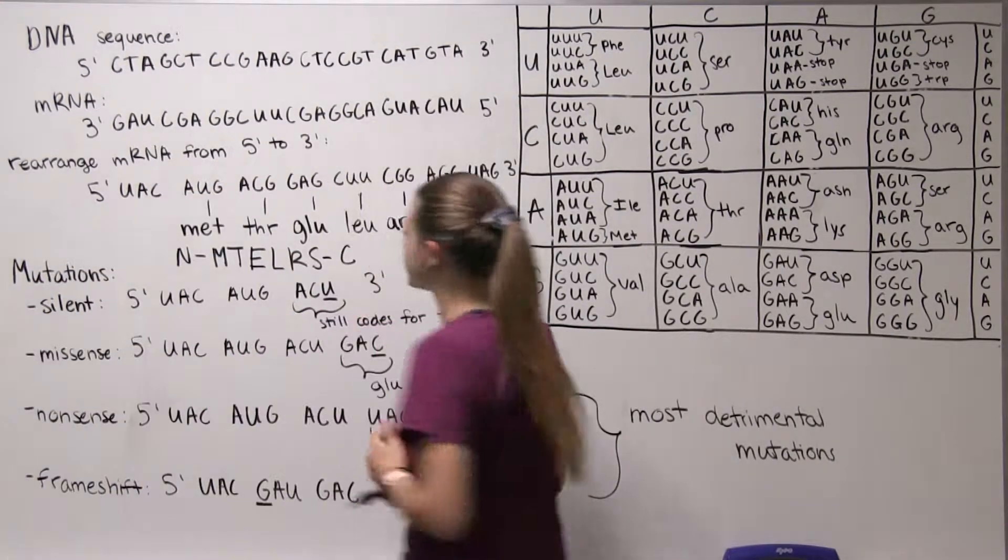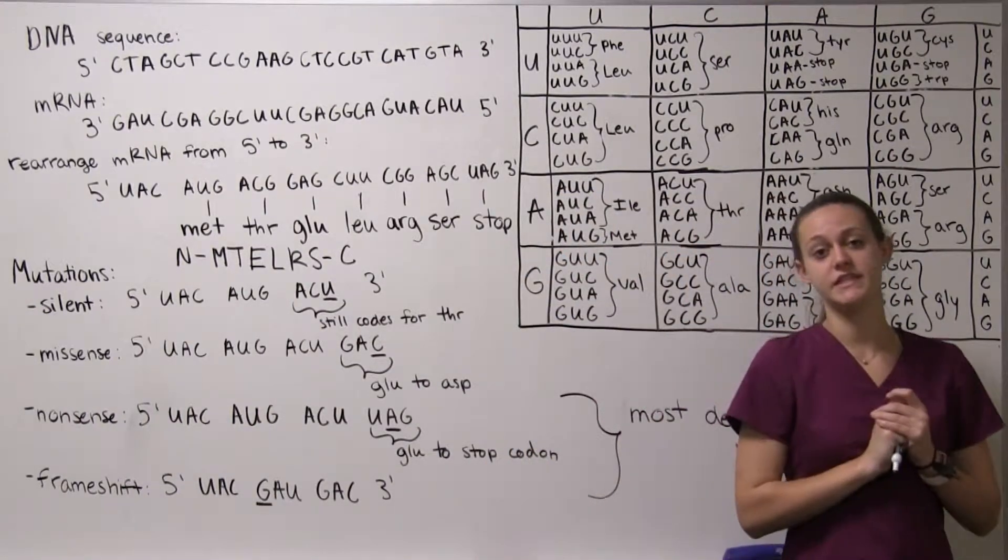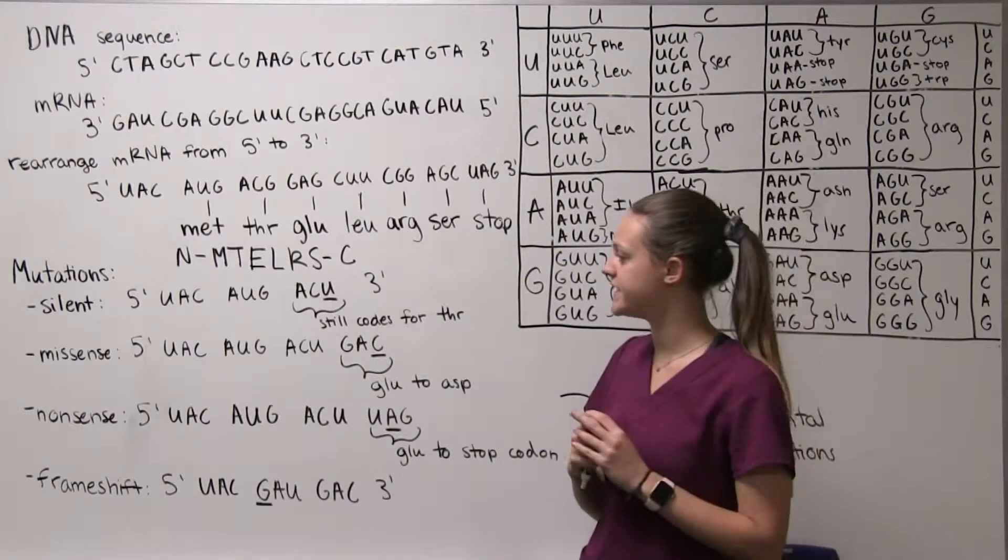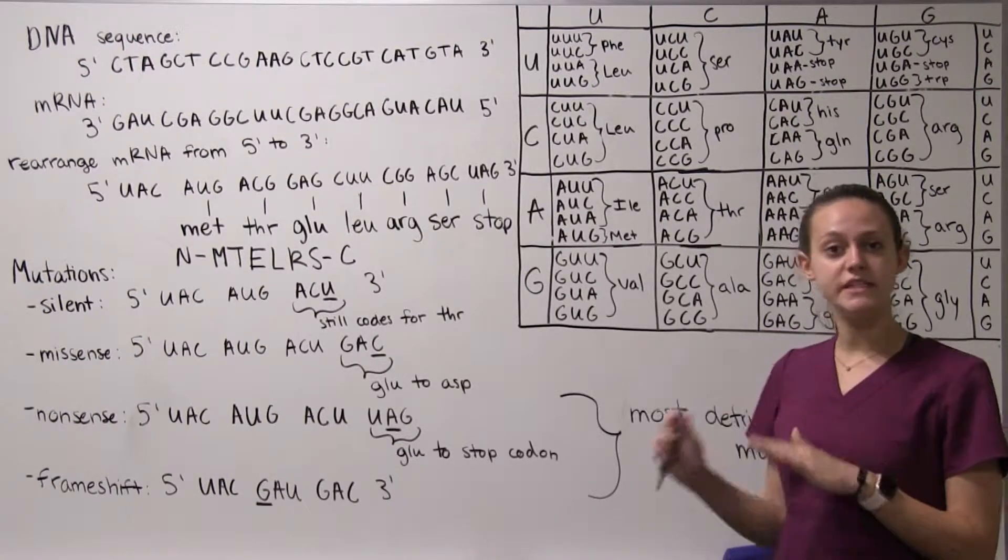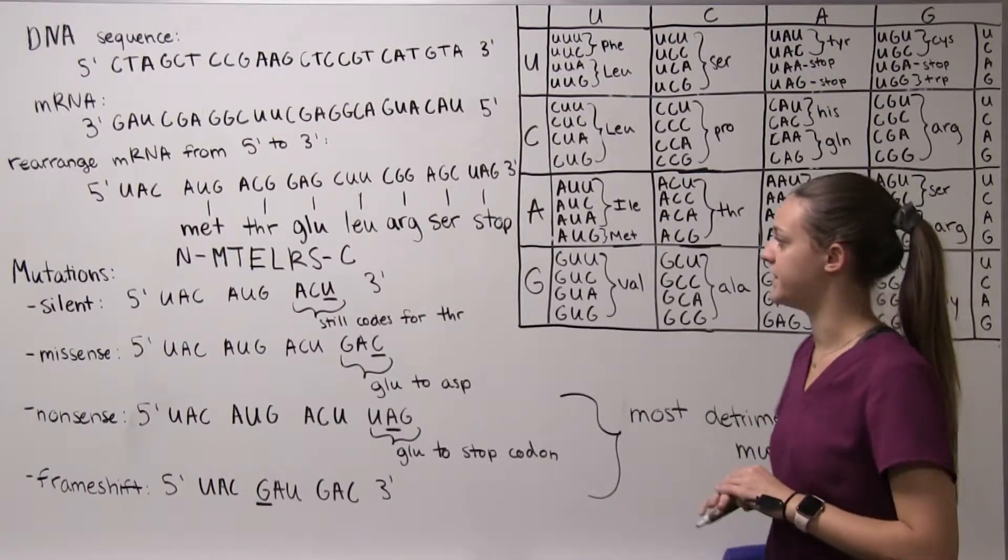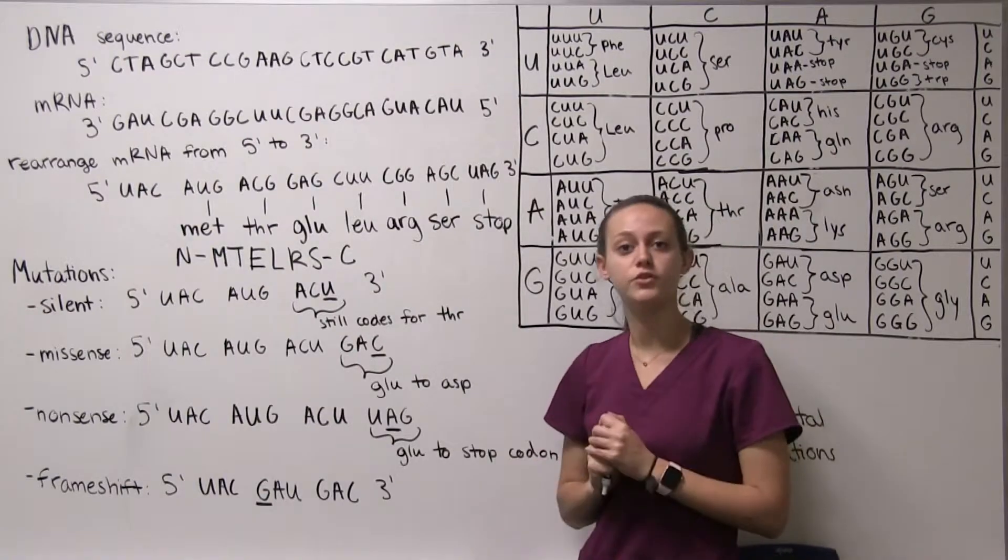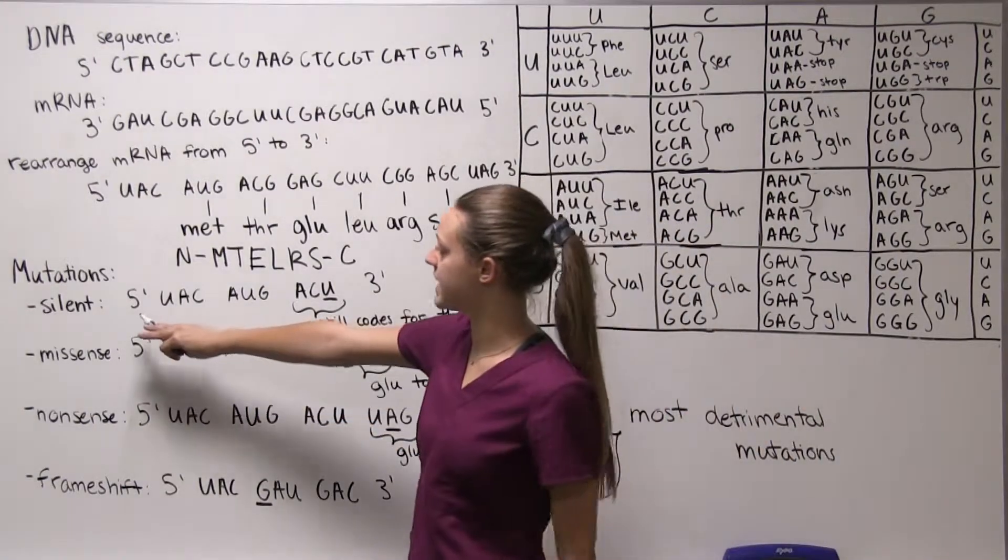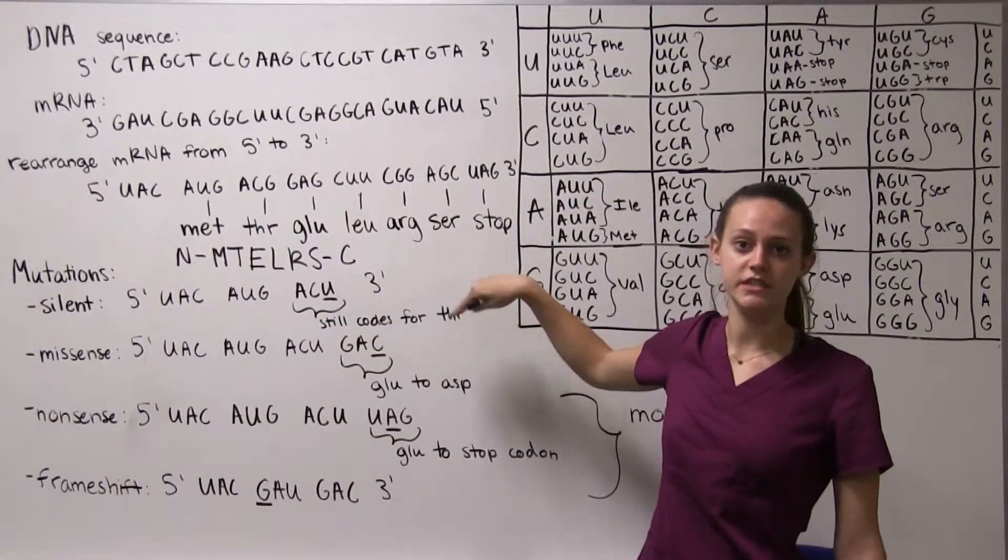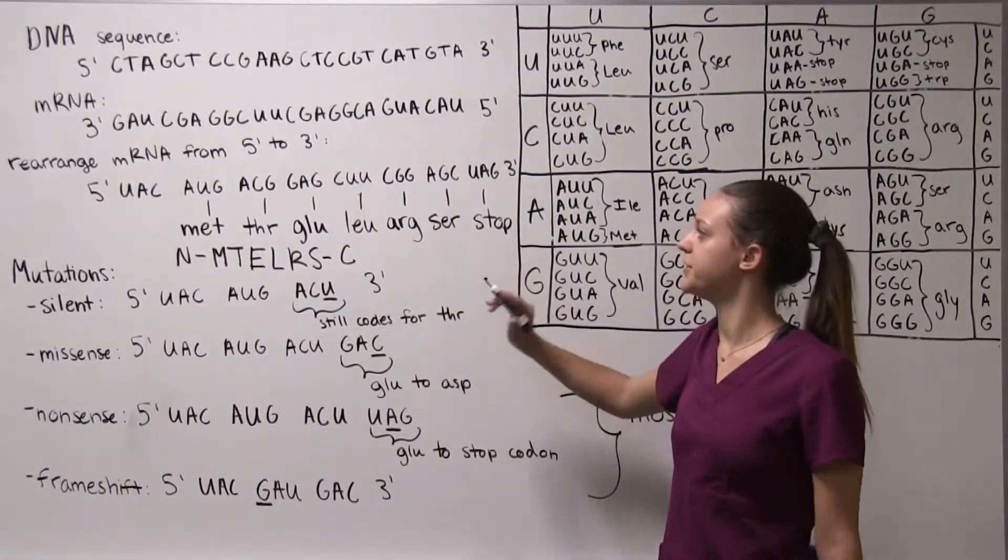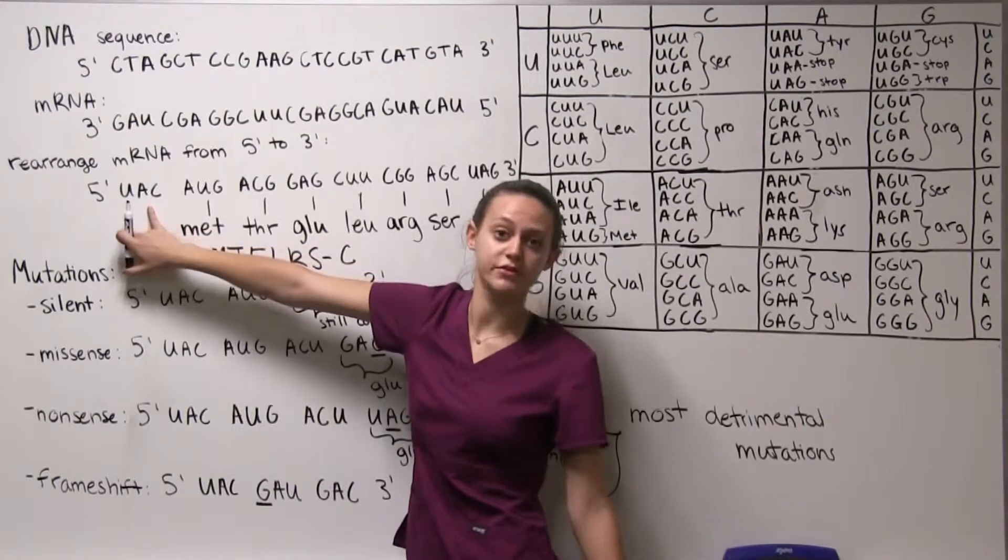Now we're going to discuss some mutations that could happen to these DNA sequences or mRNA sequences. The first one we are going to discuss is the least detrimental and the least harmful to your sequence, that's going to be your silent mutations. I shortened some of the sequences just to make things simpler but it's still the same sequence.